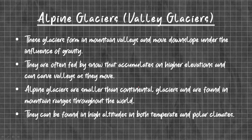Alpine Glaciers, also called Valley Glaciers. These glaciers form in mountain valleys and move downslope under the influence of gravity. They are often fed by snow that accumulates at higher elevations and can carve valleys as they move. Alpine glaciers are smaller than continental glaciers and are found in mountain ranges throughout the world, such as the Himalayan mountains and the Alps.